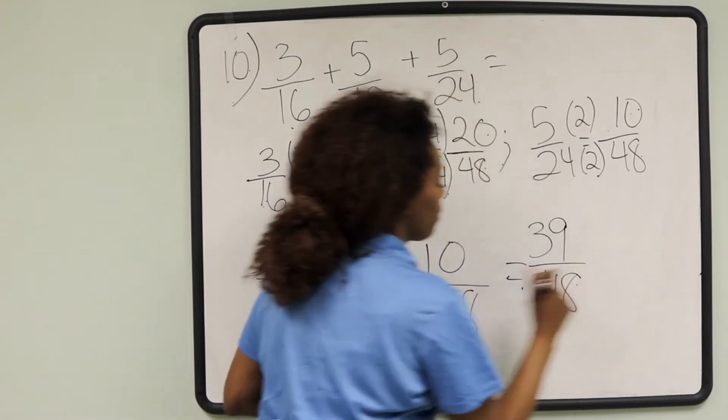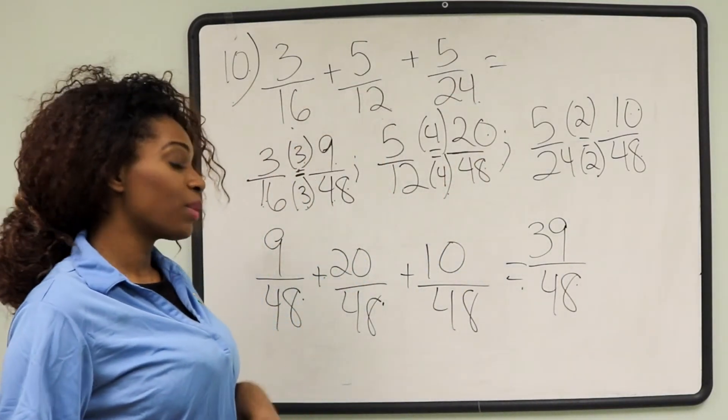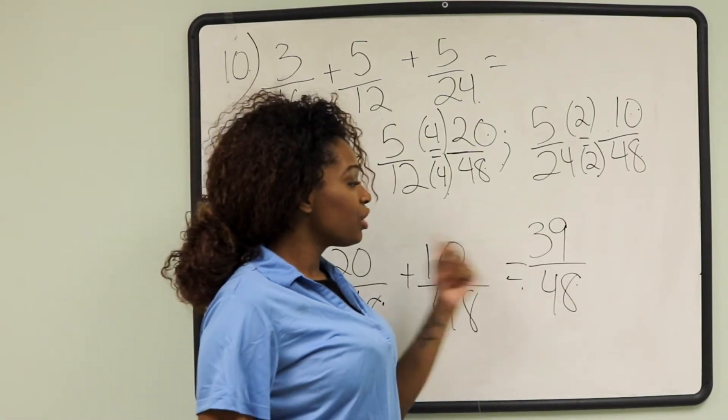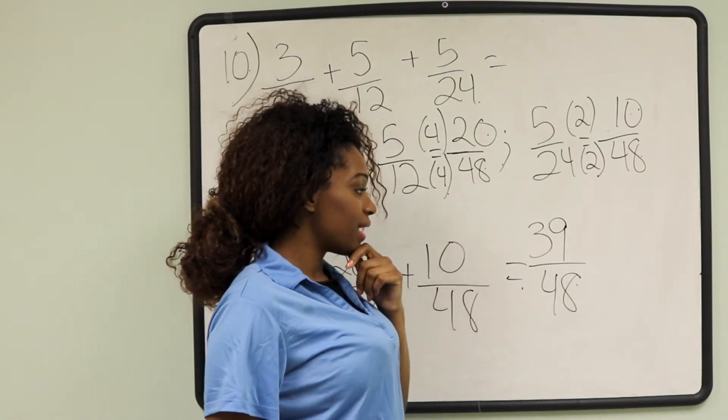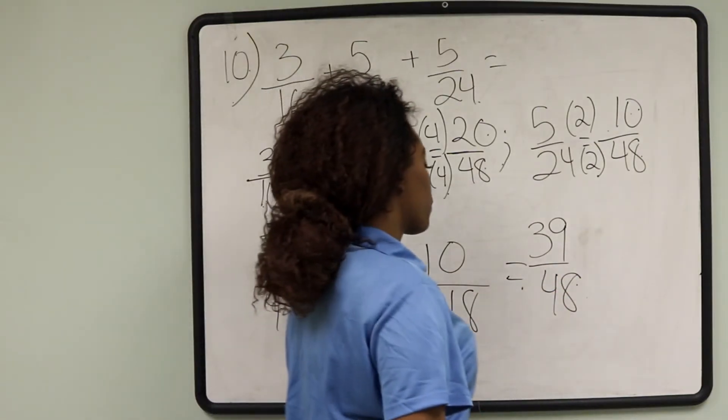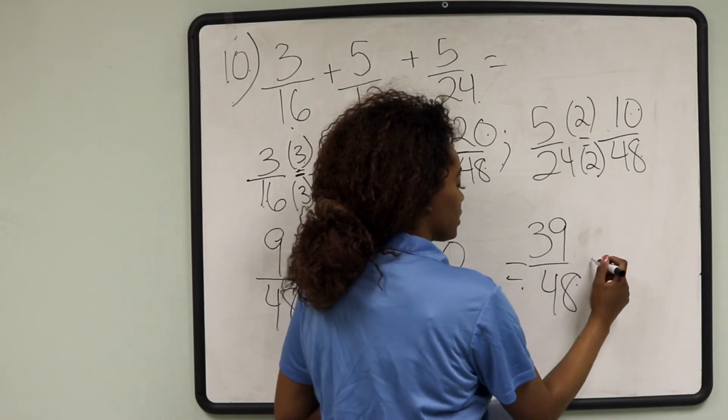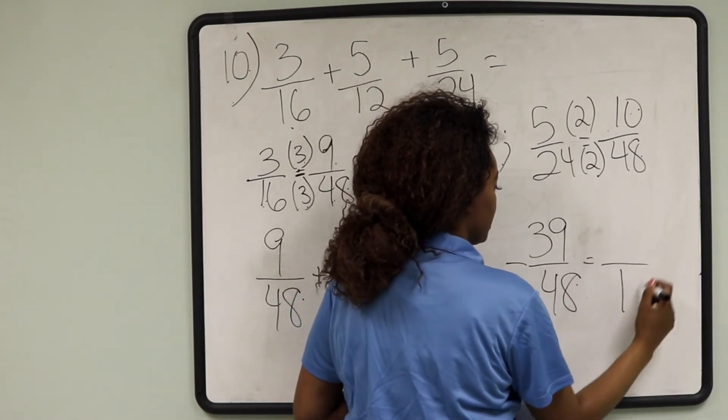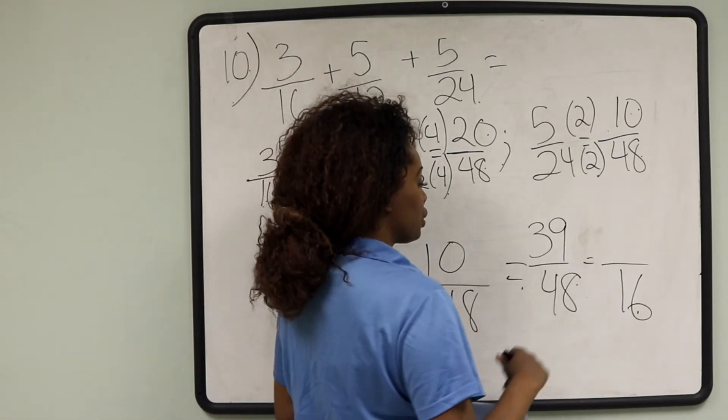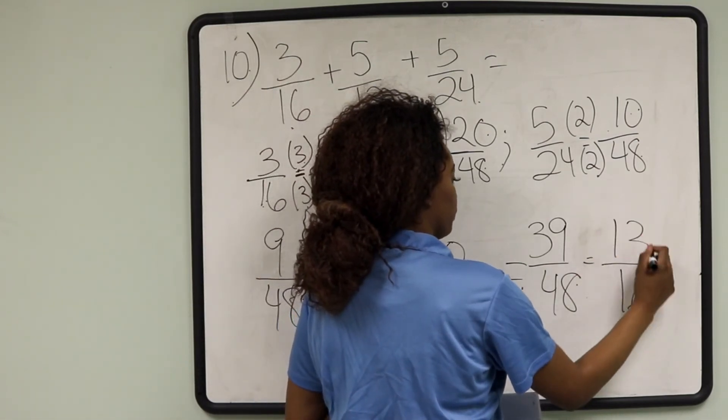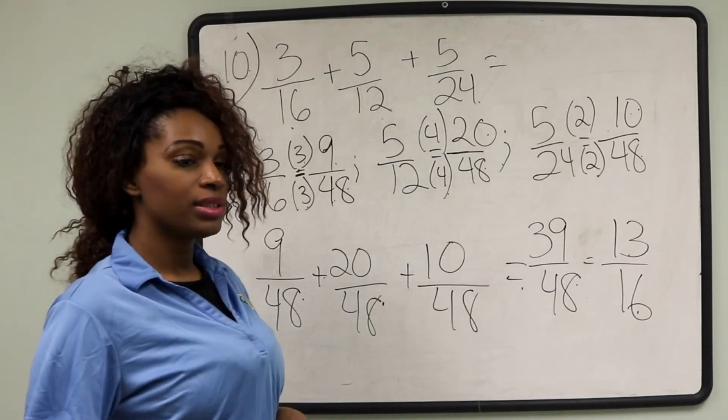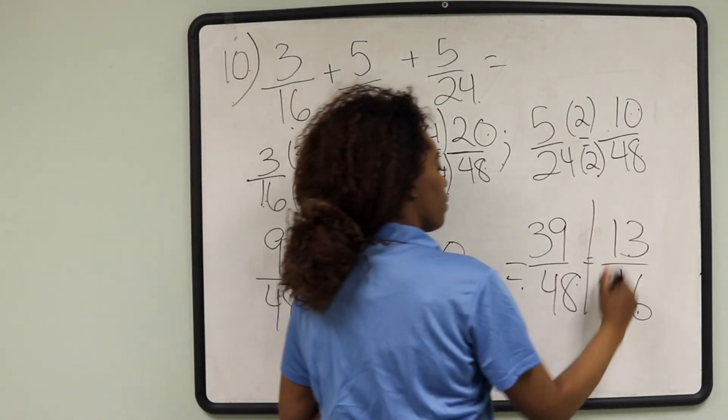Now we have to ask ourselves, can we reduce this fraction? And I know that just by looking at this, it can be divided by 3 on the numerator and the denominator. So 48 divided by 3 is going to give us 16. 39 divided by 3 is 13. Our final answer for question number 10 is 13 over 16.